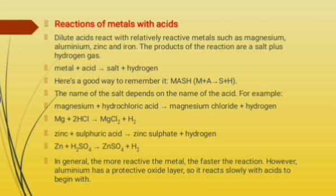Reaction of metals with acid: dilute acid reacts with relatively reactive metals such as magnesium, aluminium, zinc, iron, etc. The products of reaction are salt and hydrogen gas. Most metals react with dilute acid to produce hydrogen gas and form metal salt. Some metals like copper and lead do not react with dilute hydrochloric acid; they react with sulfuric acid and nitric acid but do not produce hydrogen gas.